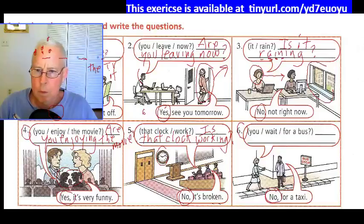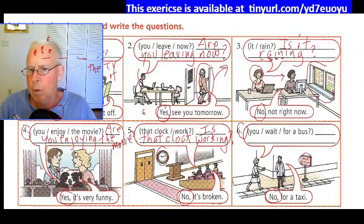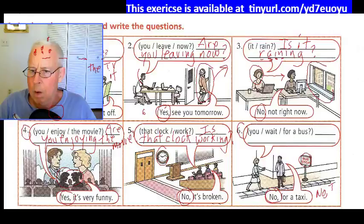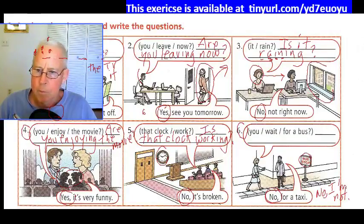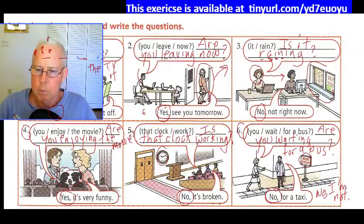Number six: 'you wait for a bus' — notice the sign says 'bus stop.' So she asks: Are you waiting for a bus? He says: No, for a taxi. Notice the only short answer with 'I' is: No, I'm not — only one short answer possible.